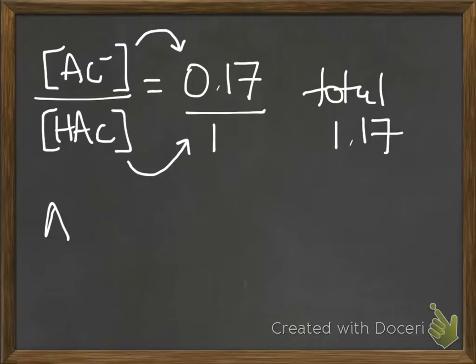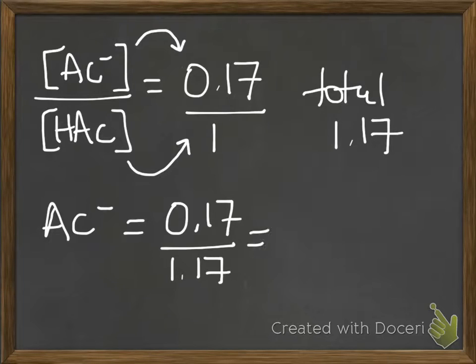So you could rewrite the amounts of each thing by saying 0.17 over 1.17 for acetate. And so the fraction of the solution is 0.145.